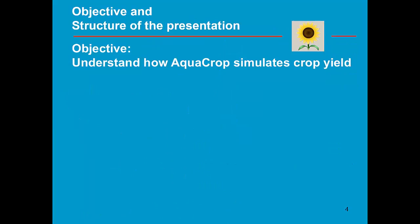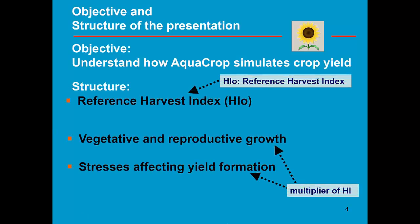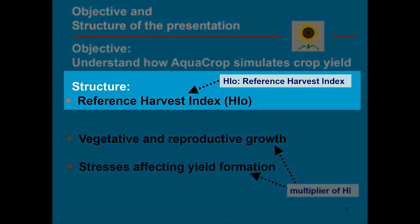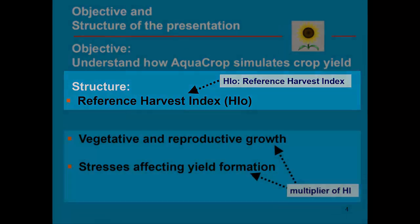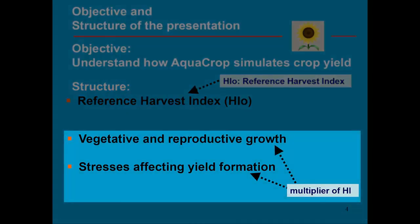The learning objective of this training module is to understand how AquaCrop simulates crop yield. First we look at the reference harvest index, and then in a second part we are going to look at the multiplier of the harvest index.